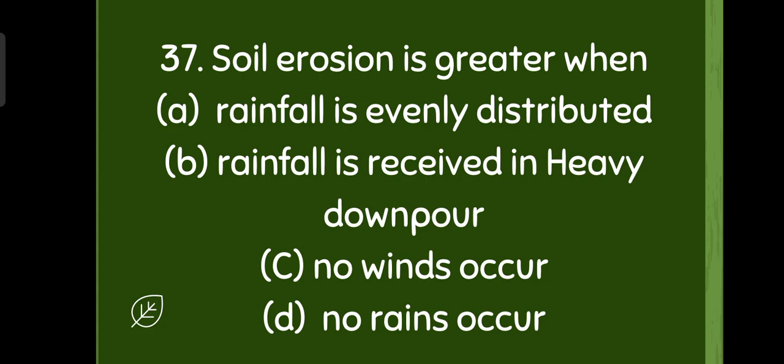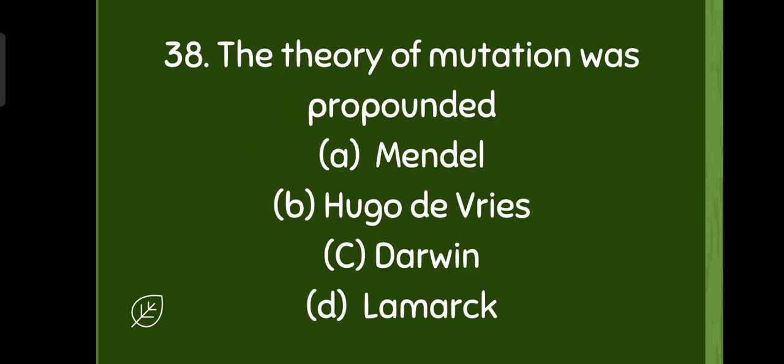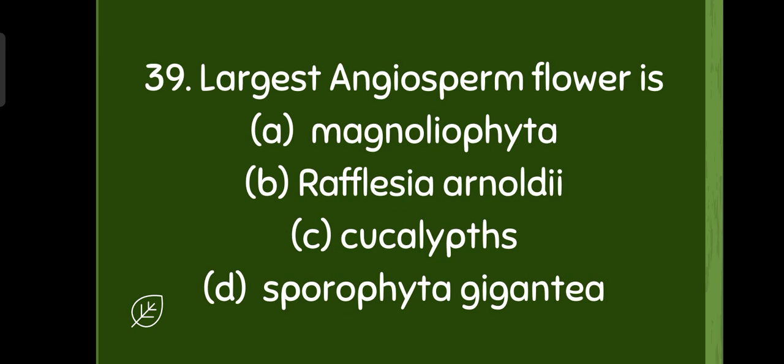The theory of mutation was propounded by option B, Hugo de Vries. Largest angiosperm flower is option B, Rafflesia arnoldii.